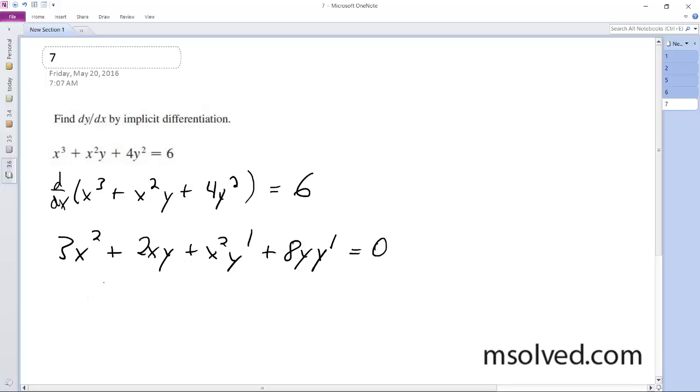x terms, well, everything but the y prime terms on the other side. So we'll have x squared y prime plus 8 y y prime is equal to negative 3 x squared minus 2 x y.